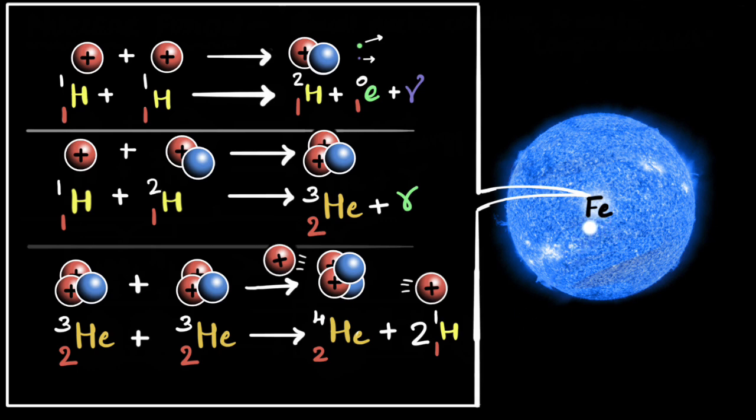Which means if you try to fuse two iron nuclei together, the product will be less stable. Which means it will not give energy anymore. It will absorb energy. This means once you have an iron core, the star runs out of an energy source.